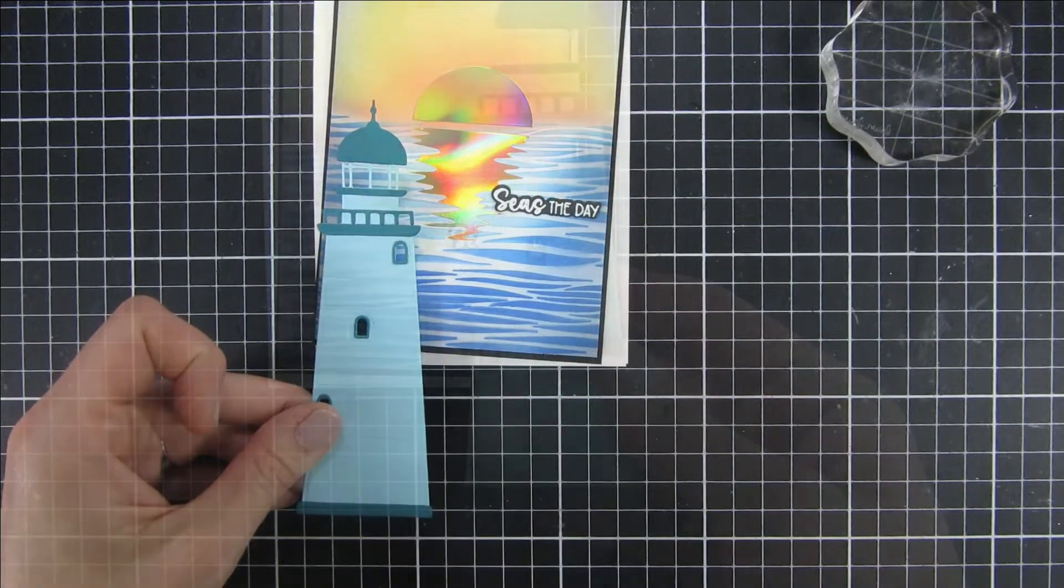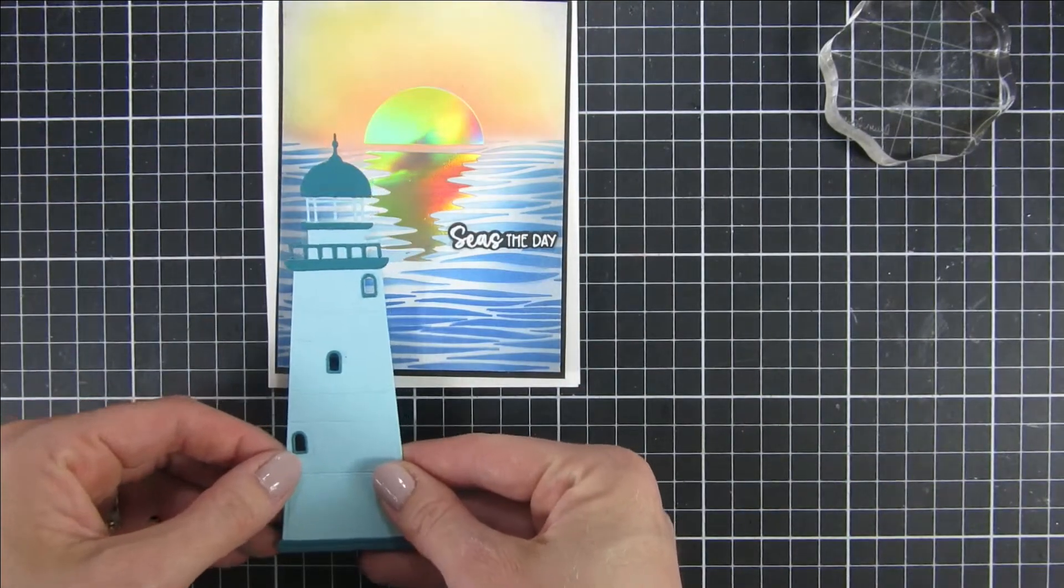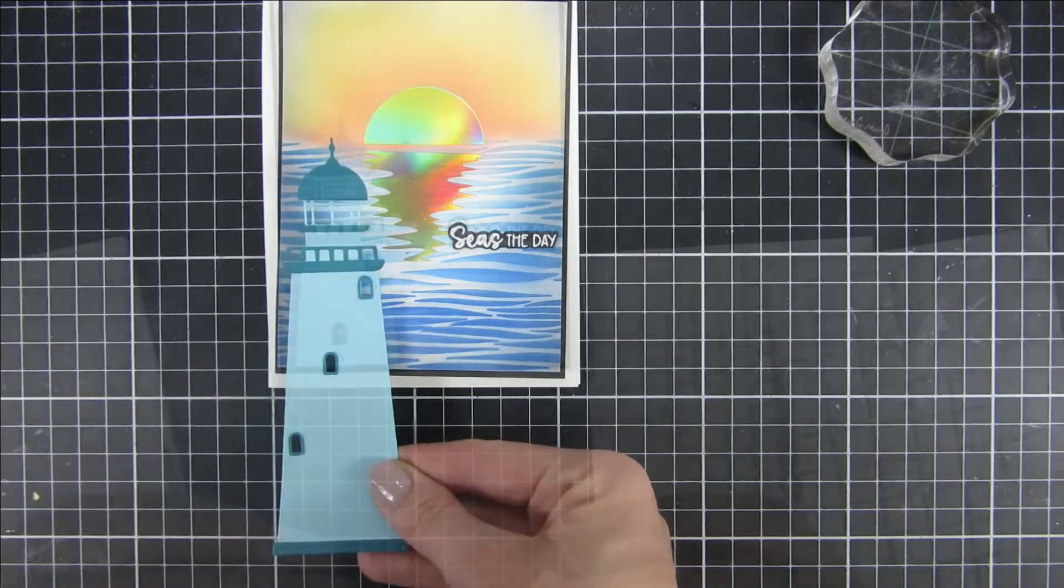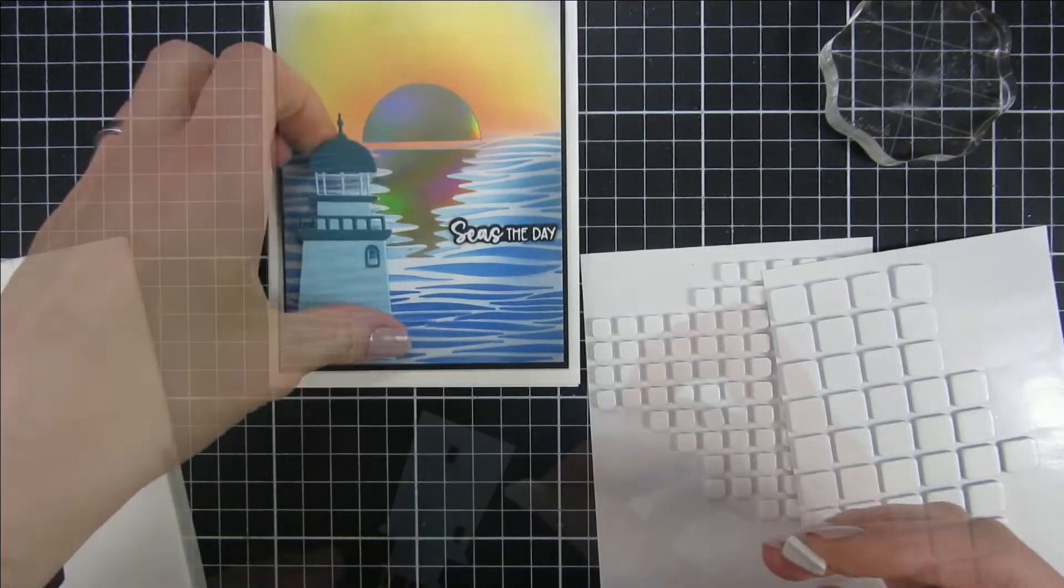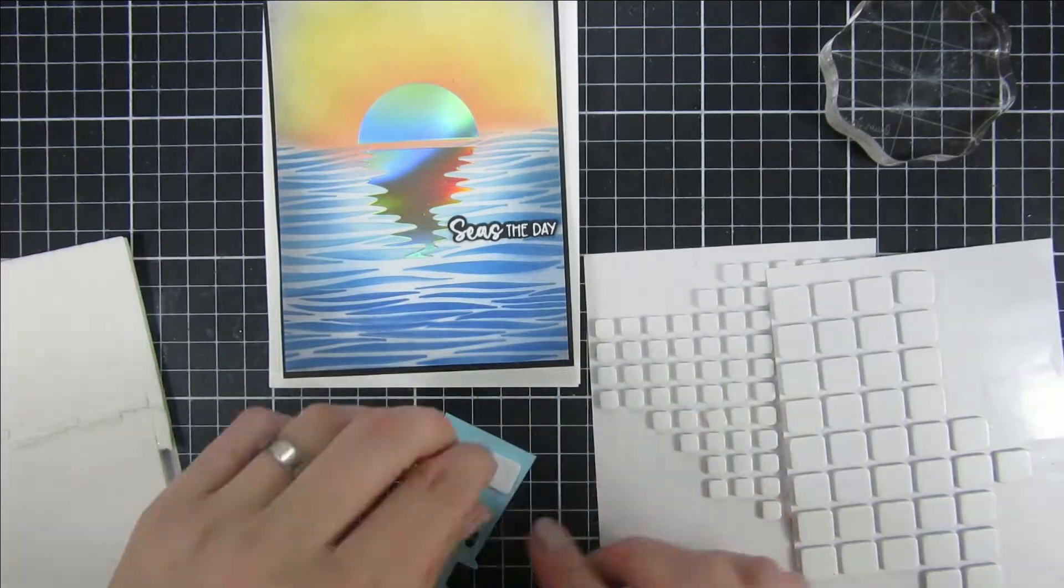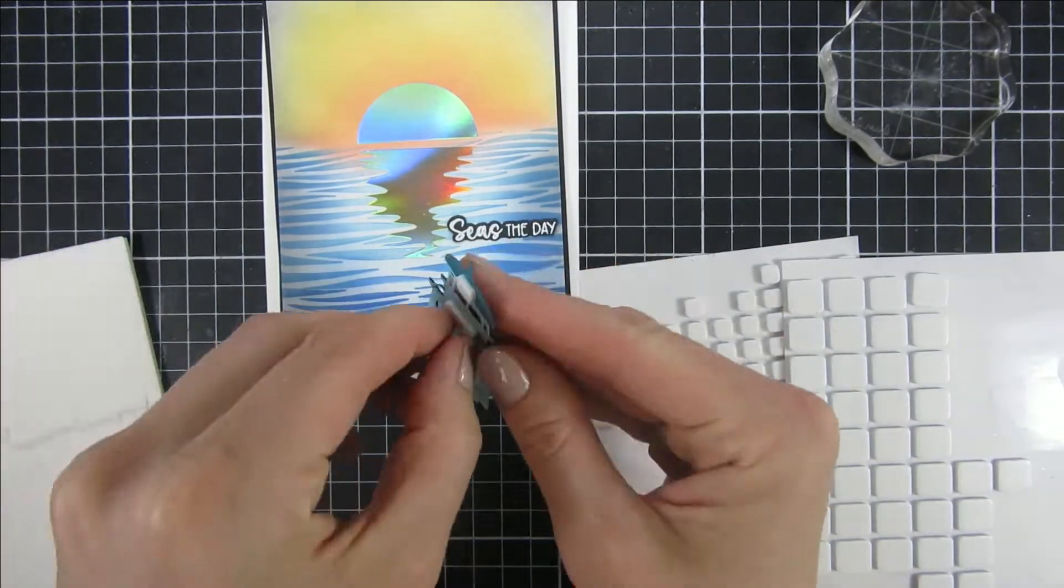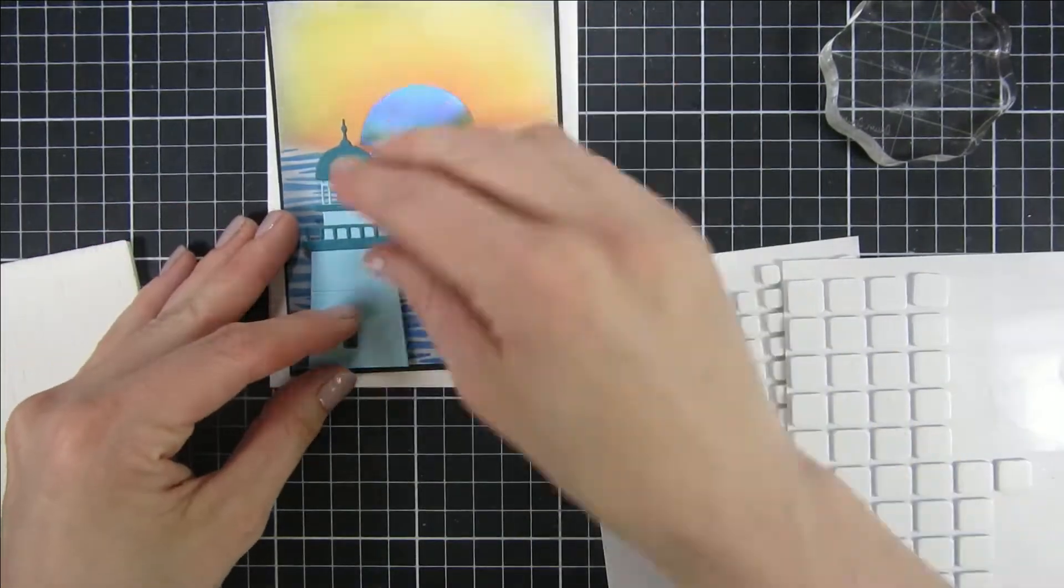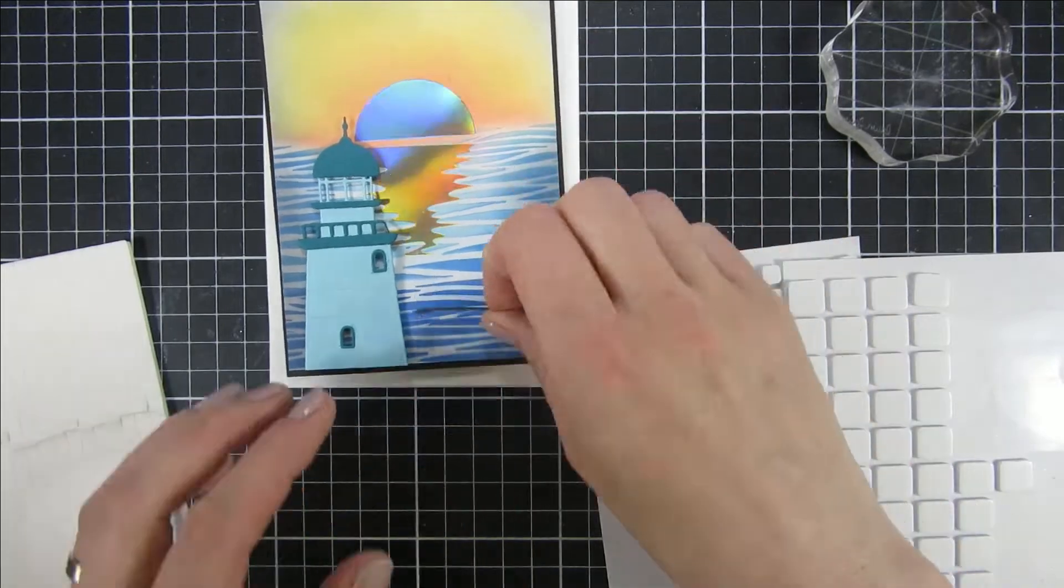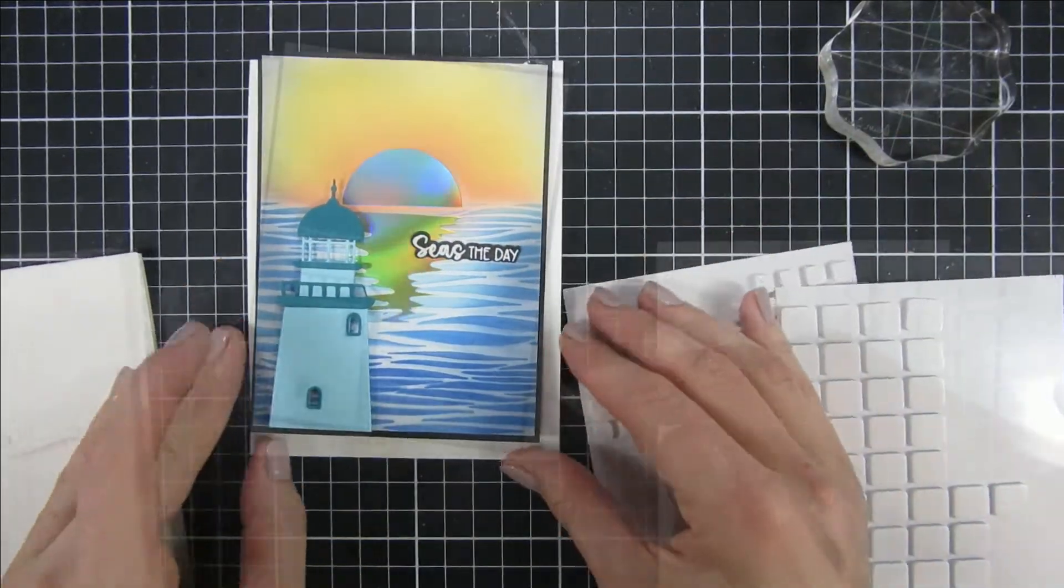This is more meant for maybe a slimline card or a mini slimline one, but I went in and just cut it off. It looks like the rest of this lighthouse is on shore and we just can't see where the base is because it's so huge. I also off camera heat set a sentiment for our card.